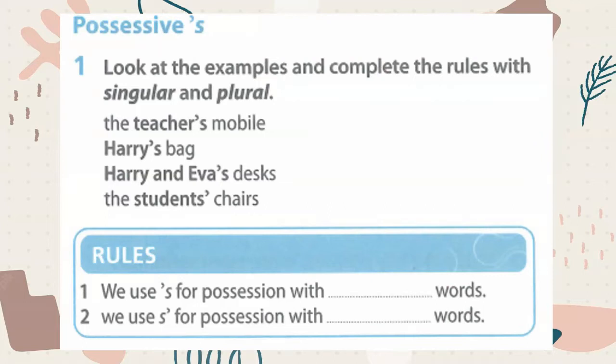Complete the rules with singular and plural. The teacher's mobile, Harry's bag, Harry and Eva's desk, the students' chairs. We use apostrophe S for possession with singular words. We use S apostrophe for possession with plural words.